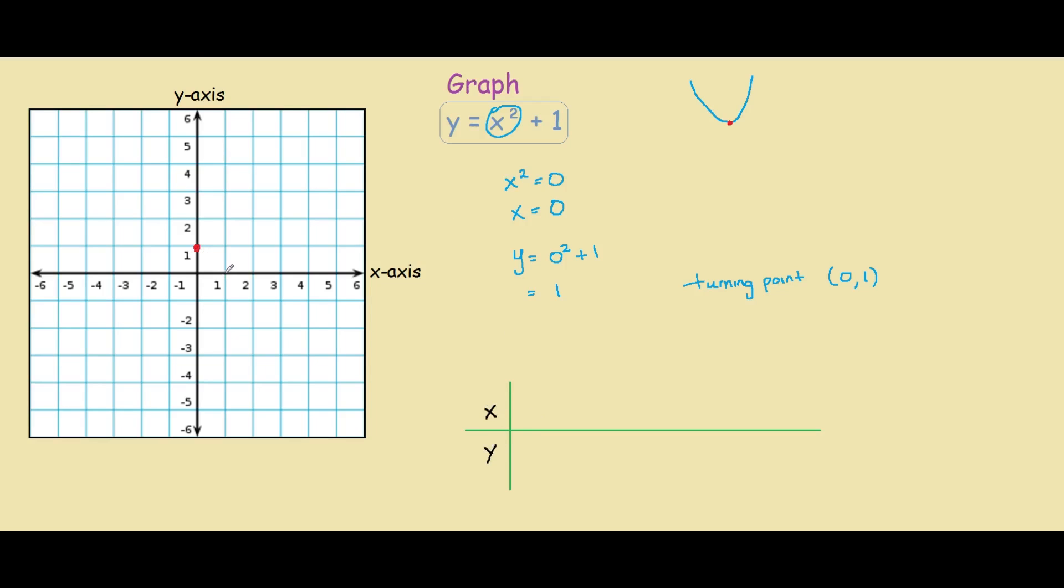When x equals 1, in our equation, y would be 1 squared plus 1, so that would be 2. When x equals 2, we have y equals 2 squared plus 1, which is 2 squared is 4, plus 1 is 5.